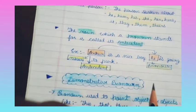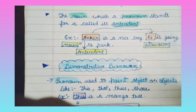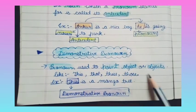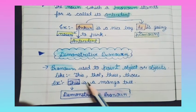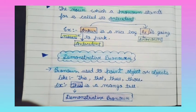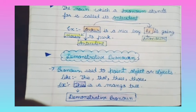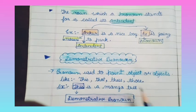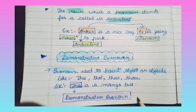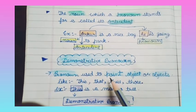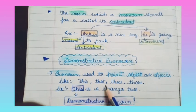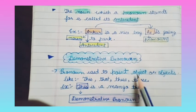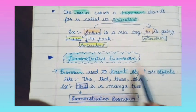Now, demonstrative pronoun: a pronoun used to point to an object or objects is called a demonstrative pronoun. Examples are: this, that, these, those. For instance, 'That is a table' or 'This is a mango tree' — here we are pointing to objects, so these are demonstrative pronouns.